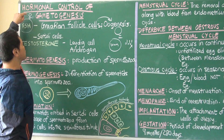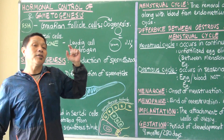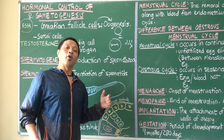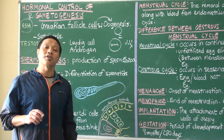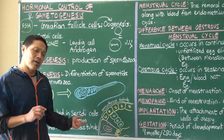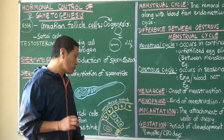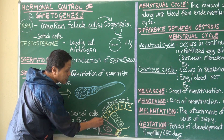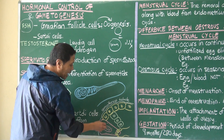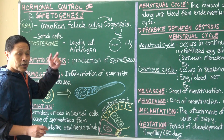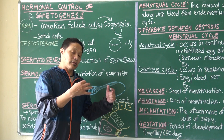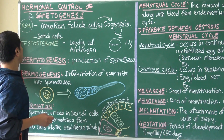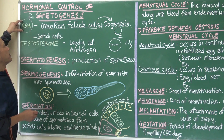Although FSH is called the female hormone, even males have this hormone. Follicle Stimulating Hormone actually stimulates the Sertoli cells of the seminiferous tubules, activating them in order to nurture the spermatids. So FSH is not exclusively a female hormone.